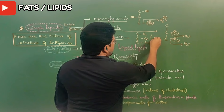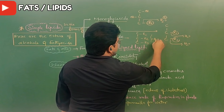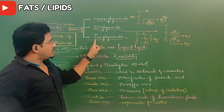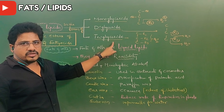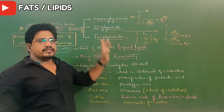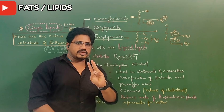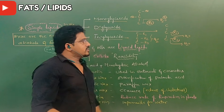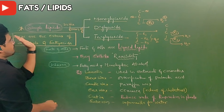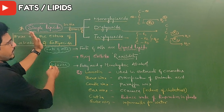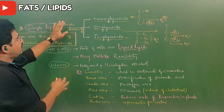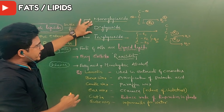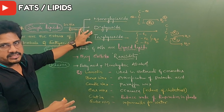For triglyceride, all three carbons with R1, R2, and R3 are engaged — three water molecules are formed. So three dehydration processes result in a triglyceride. The number of water molecules formed is three and the number of ester bonds is also three. That is how these simple or neutral fats exist as monoglyceride, diglyceride, or triglyceride.